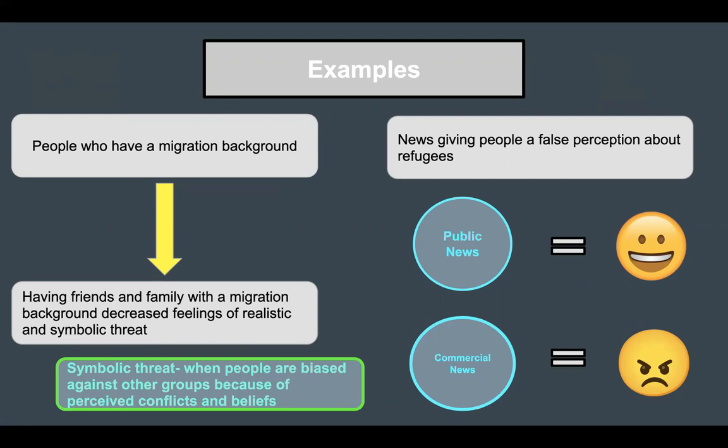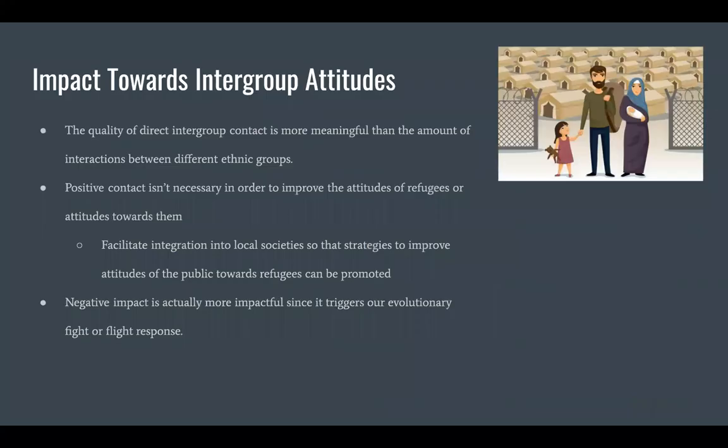Symbolic threat is when people are biased against other groups because of perceived conflicts in beliefs. An example of indirect contact would be the news giving people a false perception about refugees. People who have consumed public news have a more positive attitude because public broadcasters paint refugees as victims by highlighting humanitarian aspects. But those who consumed commercial news had a more negative attitude because commercial networks portray refugees as a threat to host societies through a negative frame.